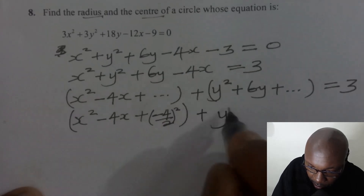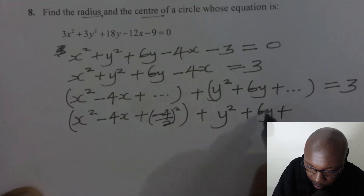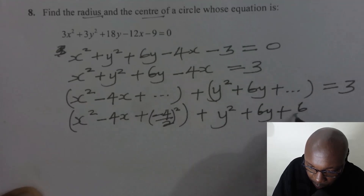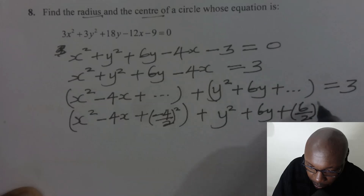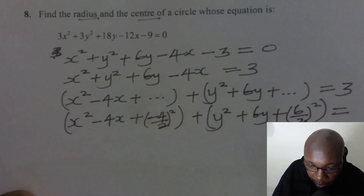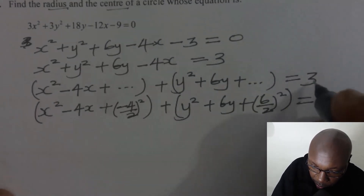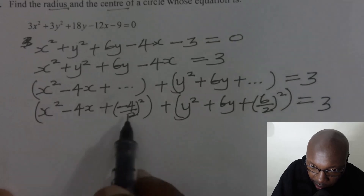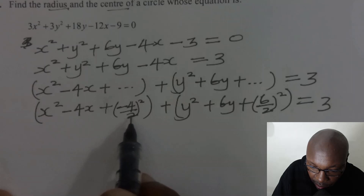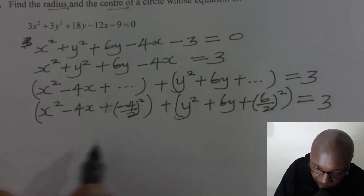Then plus y squared plus 6y — we take half the coefficient of y, then square that. Whatever we add on the left hand side, we must also add to the right hand side. Let us proceed to the next step to get the exact value we're supposed to add.